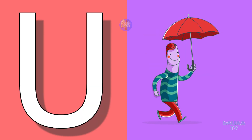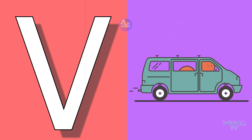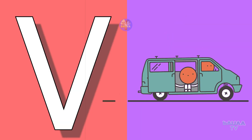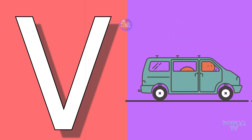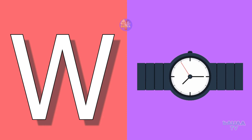U for umbrella, umbrella means sata. V for van, van means van. W for watch, watch means study.